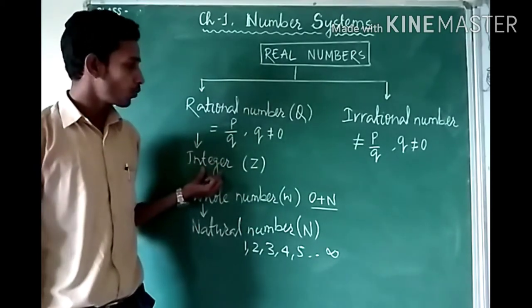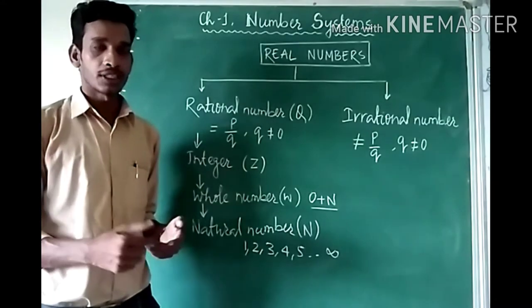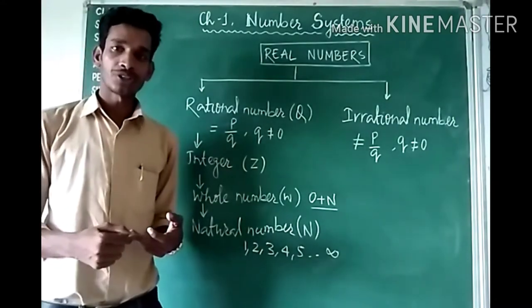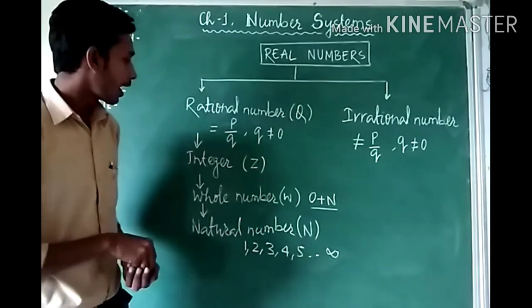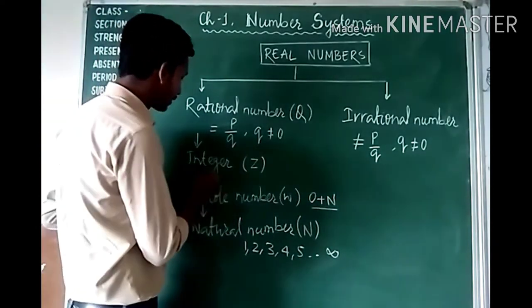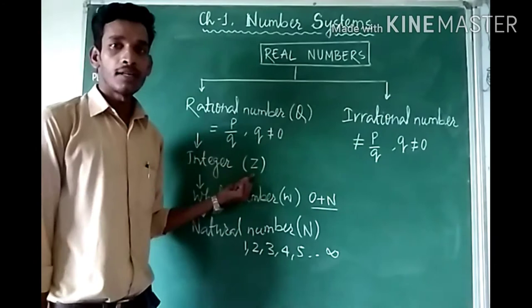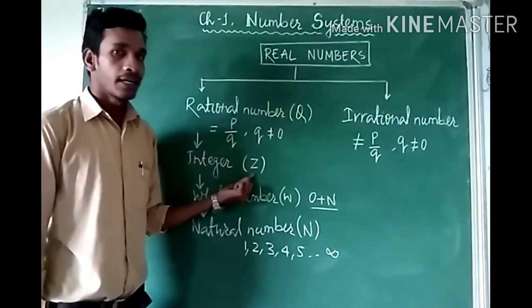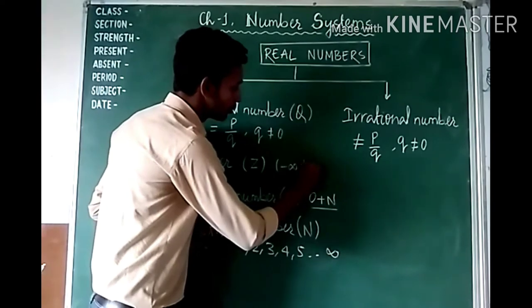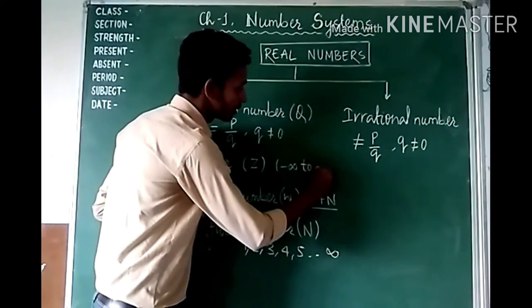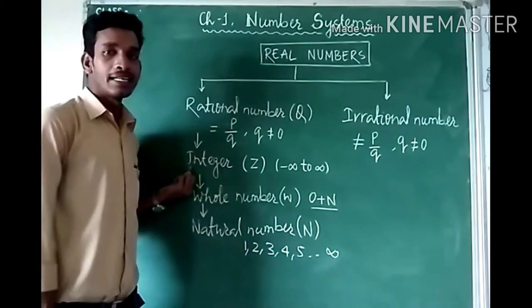Next, we are going to discuss integers. Integers include all positive numbers, negative numbers, and 0. The set of all positive numbers, negative numbers, and 0 are called integers, and we denote them by capital Z (or J). That is from minus infinity to plus infinity — all these numbers are called integers.